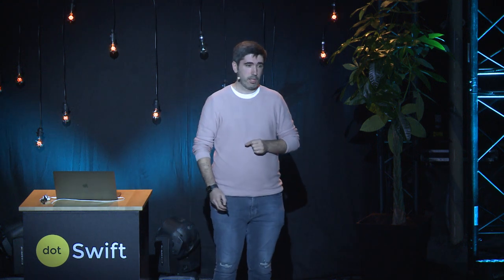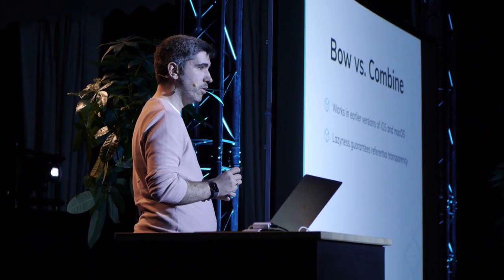The first and most obvious difference is that Combine only works in the latest versions of iOS and macOS, whereas Bow works also in earlier versions. The types provided in Bow are always lazy. However, most of the types provided in Combine are mostly eager, which breaks referential transparency and makes reasoning about the behavior of the code much harder. Combine does provide some lazy types, but as soon as you start applying combinators like map or flatMap, you end up needing to call the infamous method erase to any publisher, and then you lose type information and must rely only on programmer discipline to keep everything lazy — but that is also error-prone.